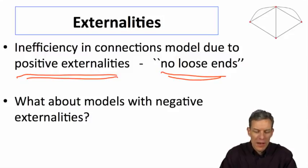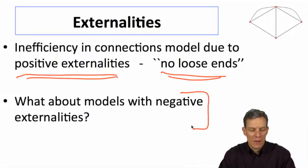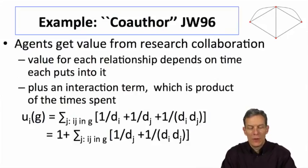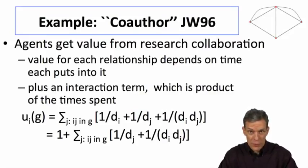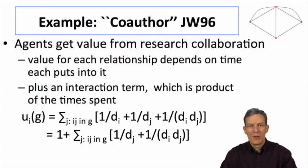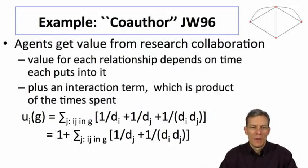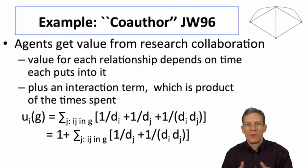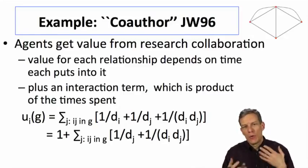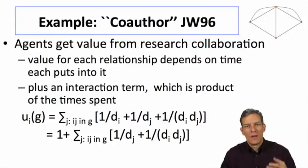Let's have a look at a different model where we see negative externalities. This is another example from the Jackson-Malinsky 96 paper, known as the co-author model. People are going to be involved in research collaborations, and the value from each relationship depends on how much time people put into those relationships. We also get an interaction term which captures synergies — if I spend more time collaborating with somebody, we have more time to brainstorm, get better ideas, and that's going to be valuable.